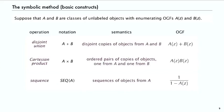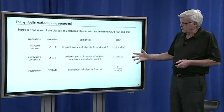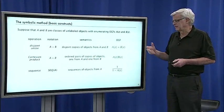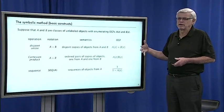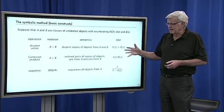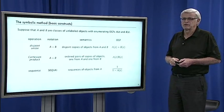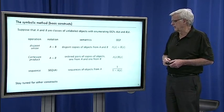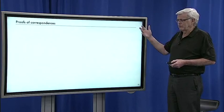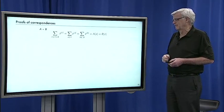Then there's sequence, which is applying the product multiple times, taking either none or one or pairs or triples, any sequence of objects from a class. Then you get another class whose generating function is 1/(1 - A(z)). With those basic constructions, we can describe quite a rich set of combinatorial classes. But we also have many other constructions and we'll look at some today.